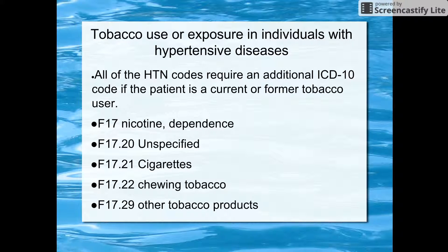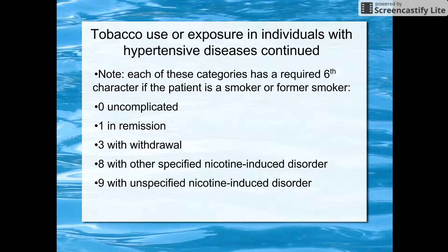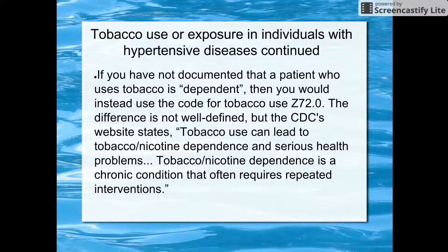For hypertension and smokers, use the appropriate hypertension code, and if the patient smokes, also add F-17.20, F-17.22, or F-17.29. Each of these categories has a required sixth character: zero is uncomplicated, one is in remission, three is with withdrawal, eight is with unspecified nicotine-related disorders, and nine is unspecified nicotine disorder. If it has not been documented that a patient is dependent on nicotine or tobacco, you need to code Z-72.0 for tobacco use.